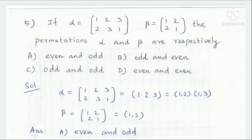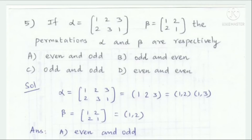If alpha equals one permutation and beta equals another permutation, and alpha and beta are even permutations, then — to determine if a permutation is even, express each cycle: take a cycle of length 2 and prepare transpositions. An even number of transpositions means an even permutation.